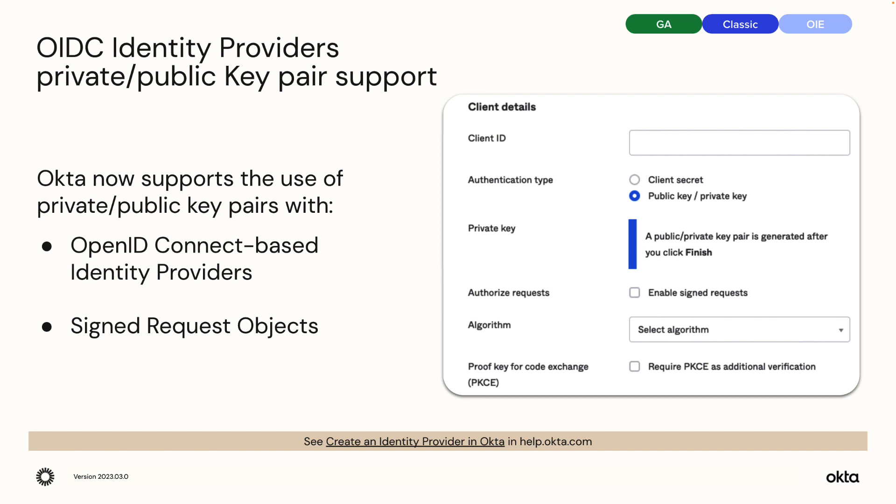OIDC Identity Providers Private and Public Key Pair Support. Previously, Okta only supported the use of Client Secret as the client authentication method with an OpenID Connect-based identity provider. Okta now supports the use of Private and Public Key Pairs with OpenID Connect-based identity providers. Additionally, the signed request object now also supports the use of Private and Public Key Pairs.